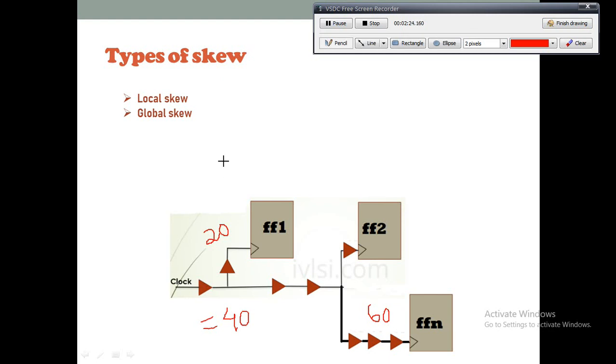And then one more term is there, that is called useful skew. What is useful skew? So useful skew is purposely added in the design to meet the timing, especially in the clock paths where timing is failing, so that the timing passes in that path.